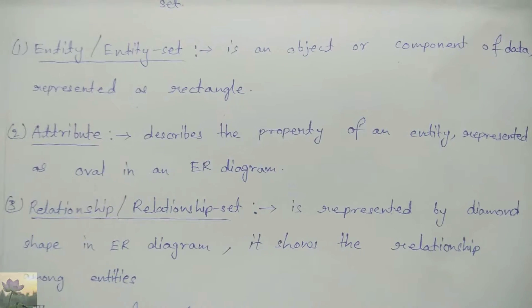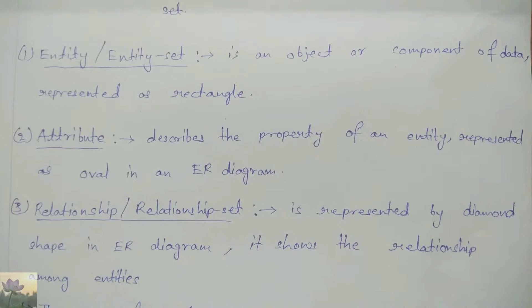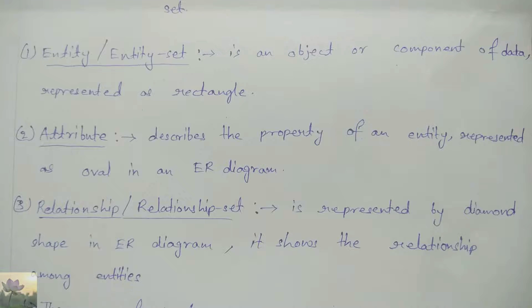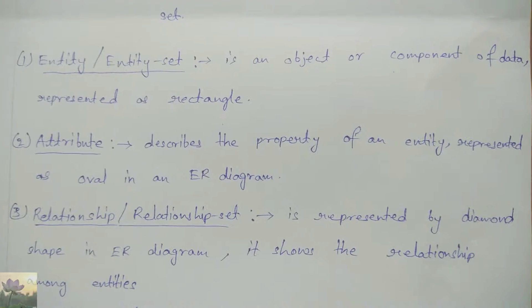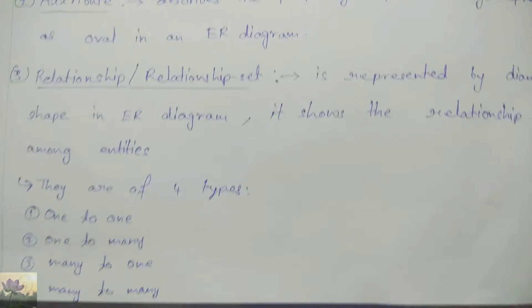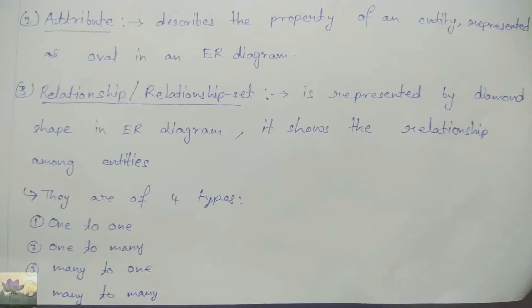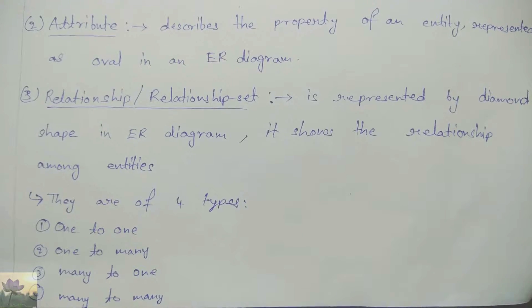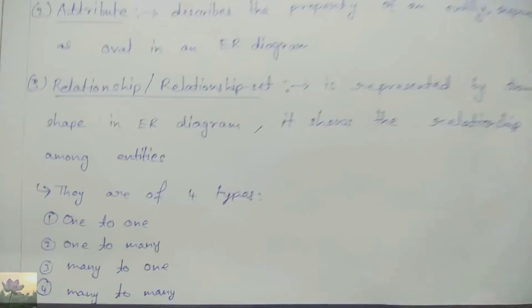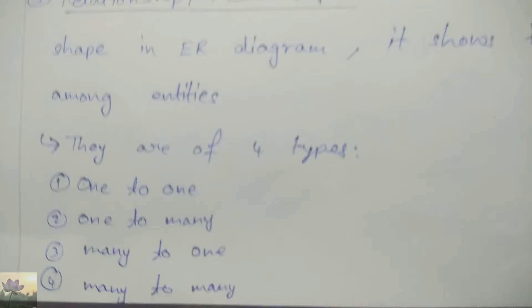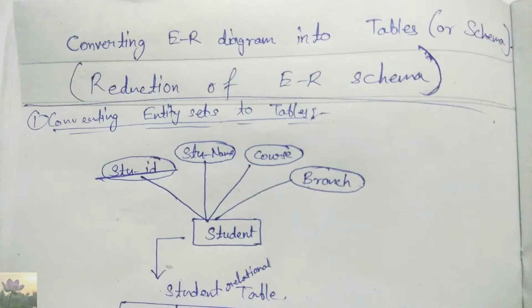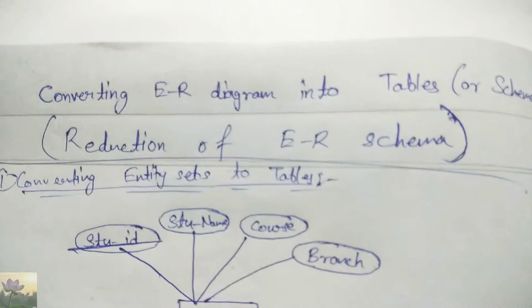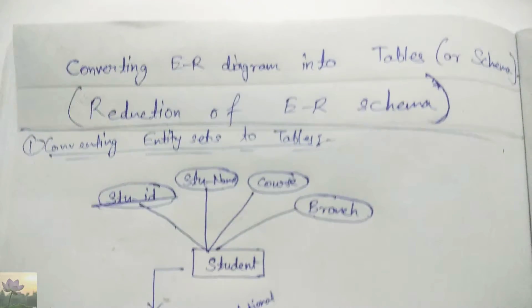An entity is basically an object, and a group of objects is called an entity set. The same applies to attributes and relationships. Relationships are of four types: one-to-one, one-to-many, many-to-one, and many-to-many. Now let's begin our main topic — converting an ER diagram into tables.